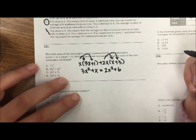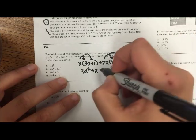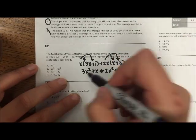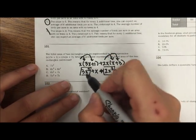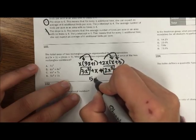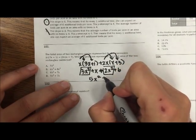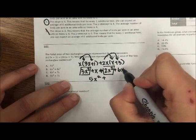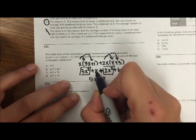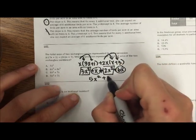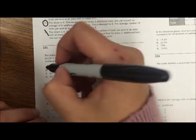And then I'm going to add like terms. So my like terms, 3 plus 2, would give me 5x squared. And then that's supposed to be a 6x—2x times 3 is 6x. And then x and 6x give me 7x. So that would be D.